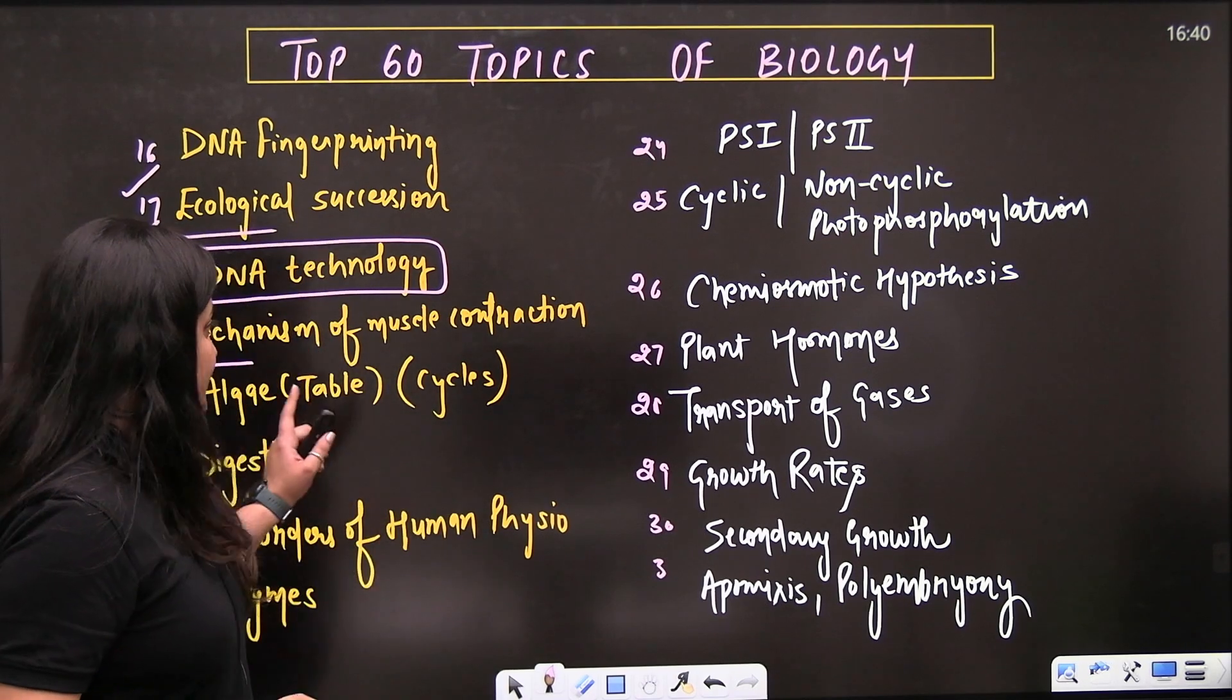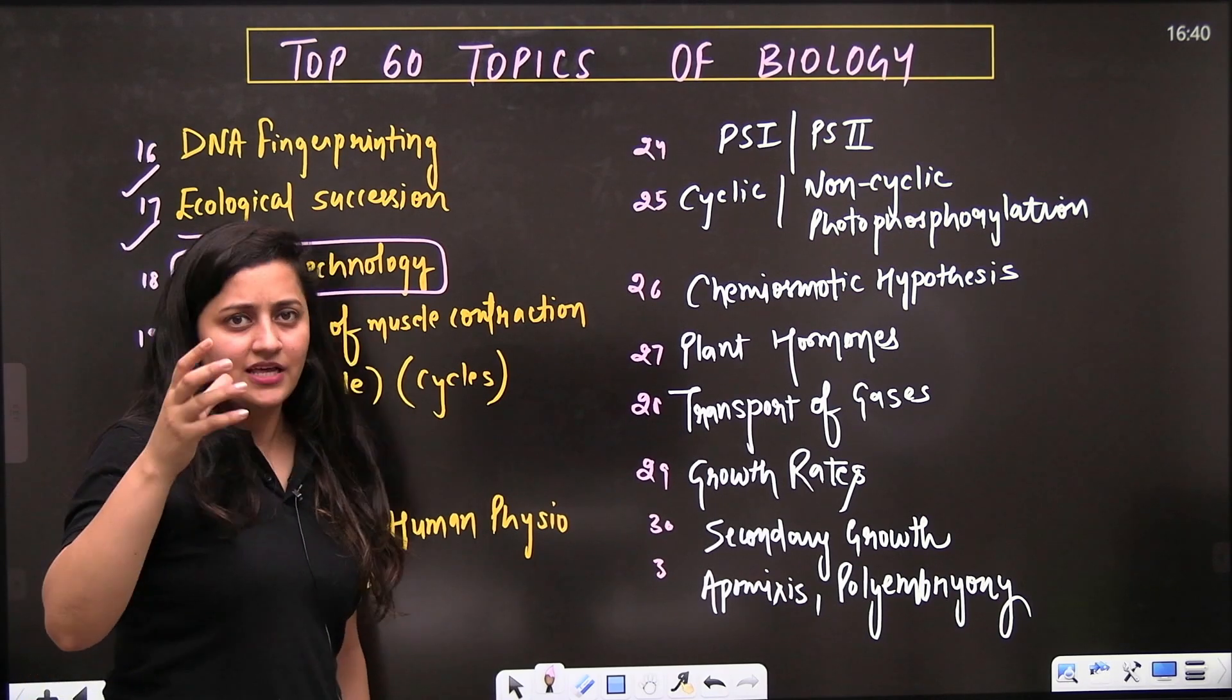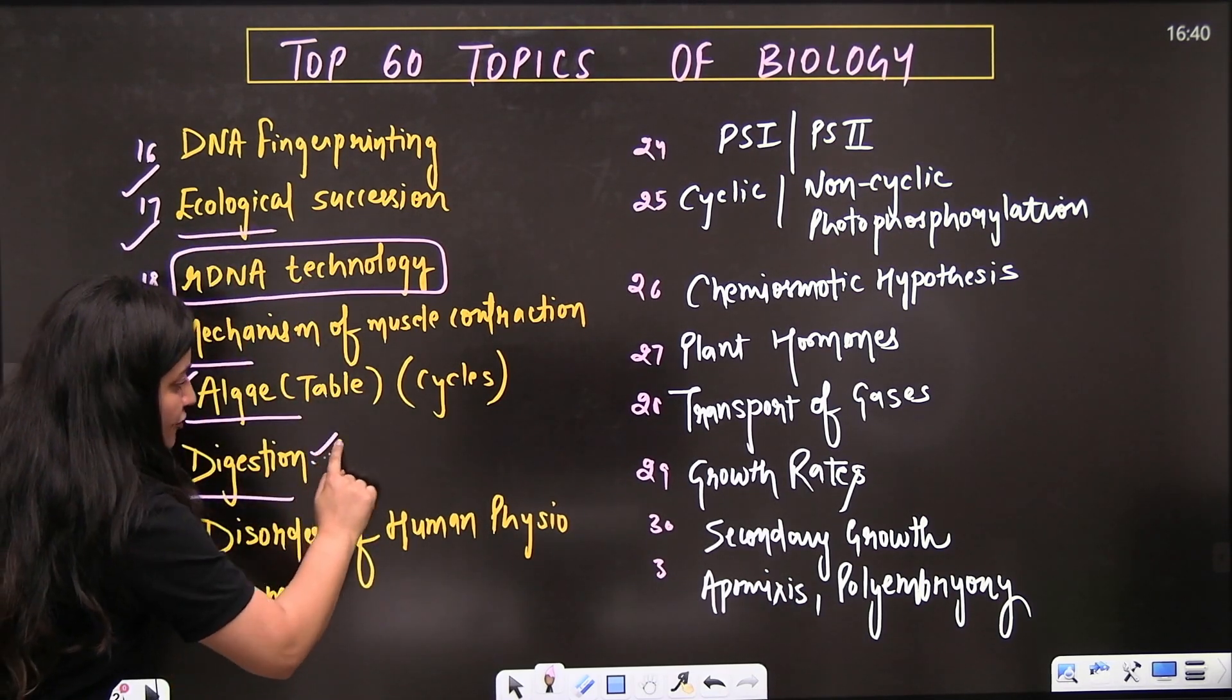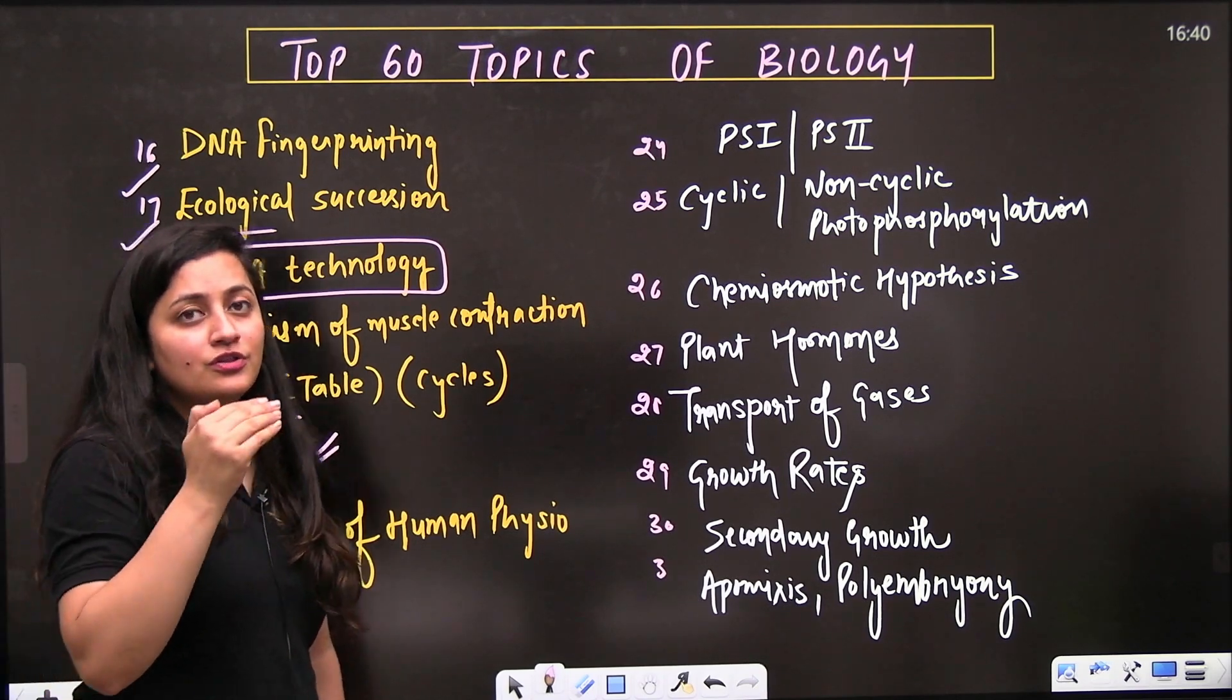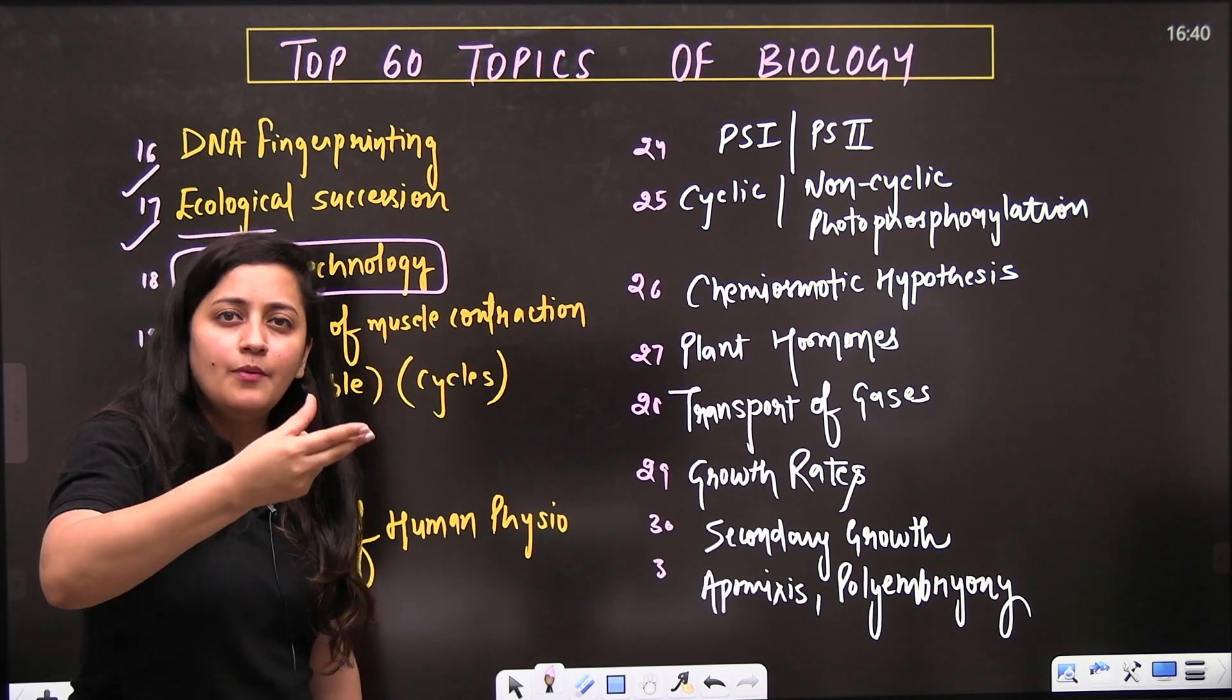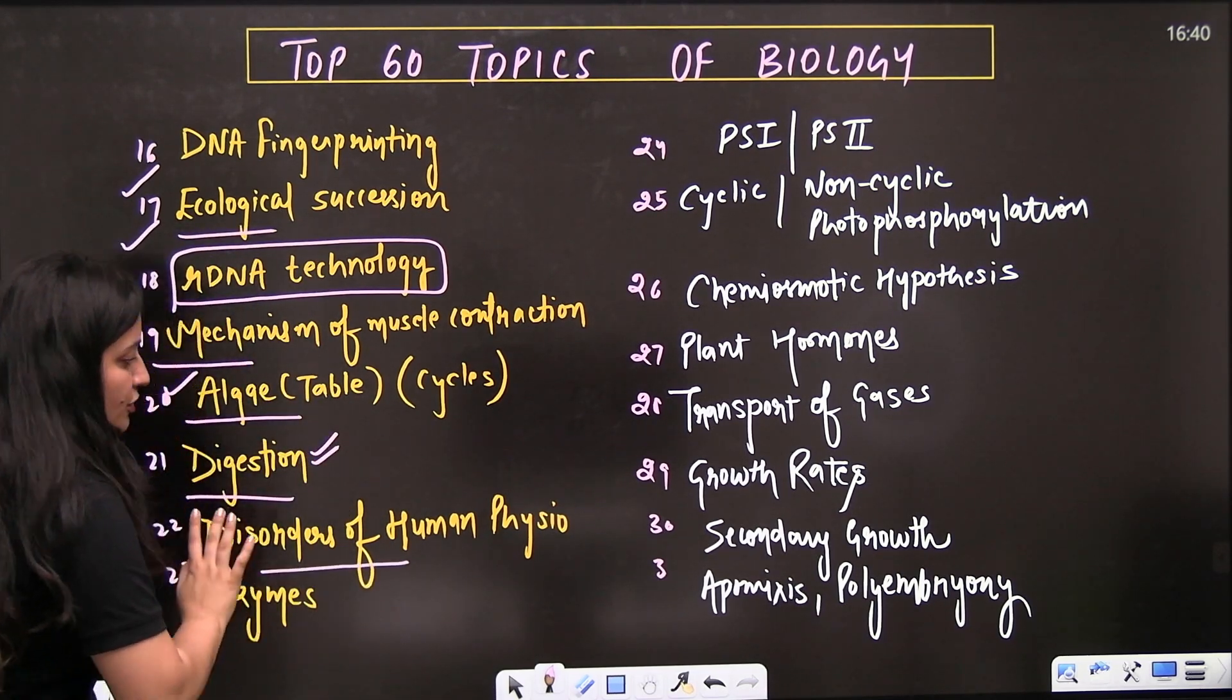Then comes the algae from the plant kingdom - the algae part, the table, and even the life cycles of the plants are important. Then comes digestion - from digestion you need to focus on the digestion of different substrates, the enzymes used for carbohydrates, protein, fats like this.